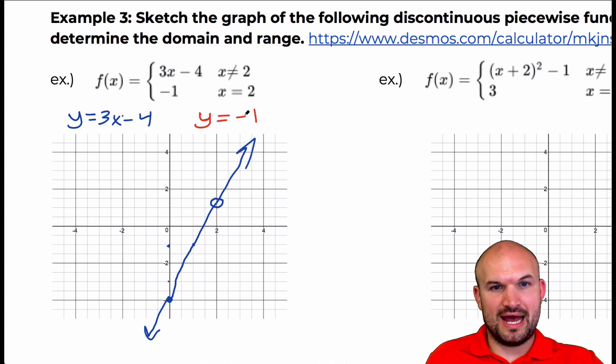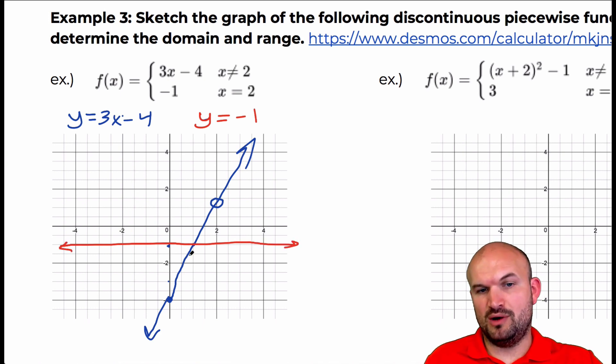Then the next function is y equals negative 1. So let's go ahead and graph that. So at y equals negative 1, I go down to negative 1 and I just draw a nice little line at y equals negative 1. Now obviously I can't have this whole graph because then both of them show up and I went past the vertical line test. But it says at x equals 2, y equals negative 1. So there's going to be a little dot.